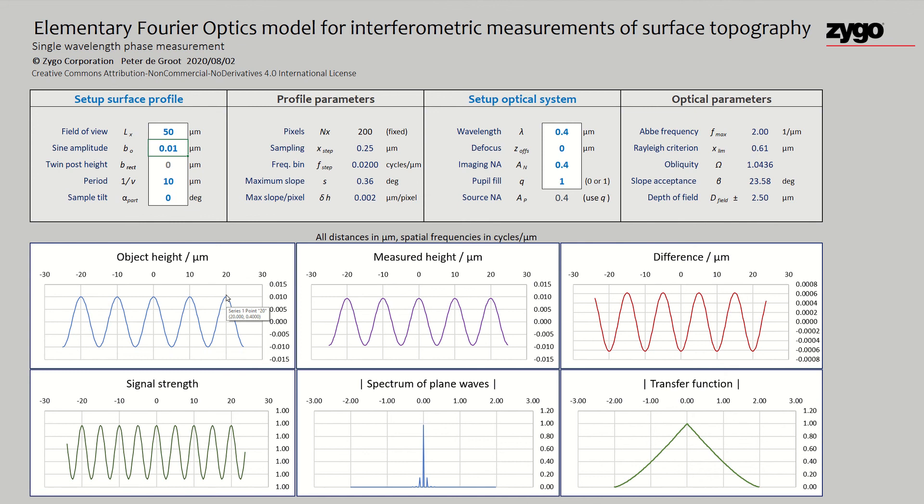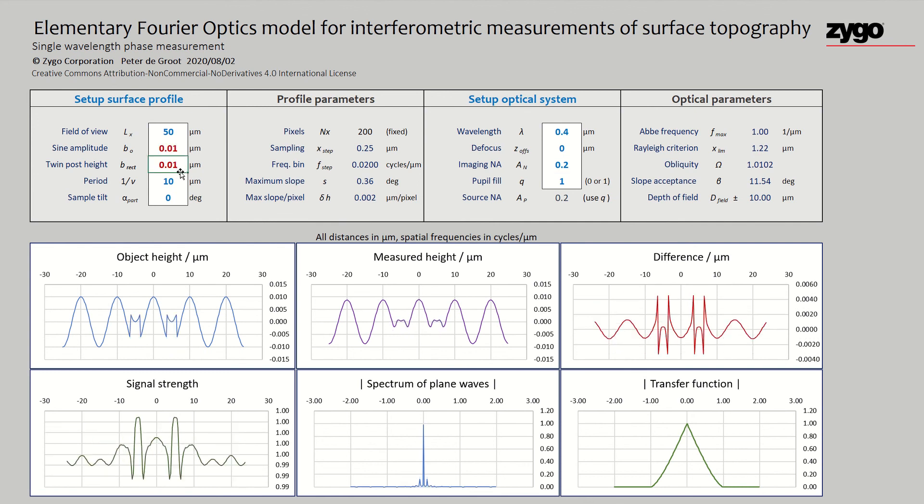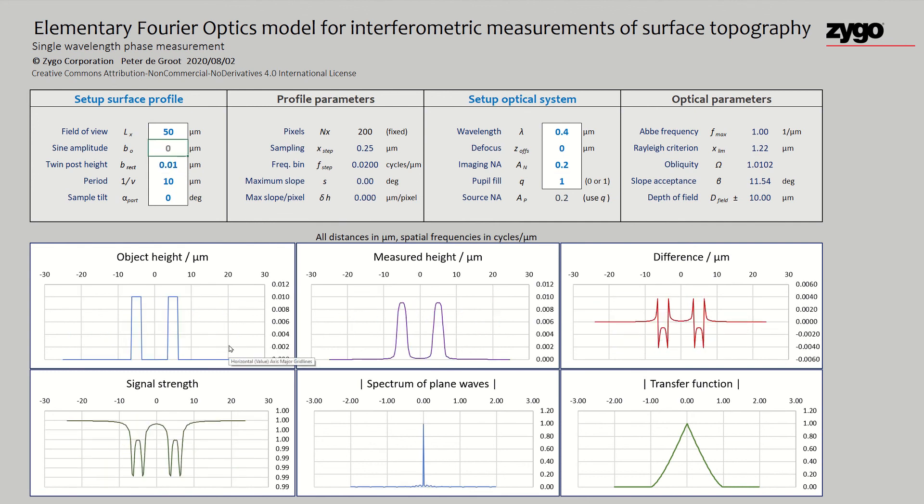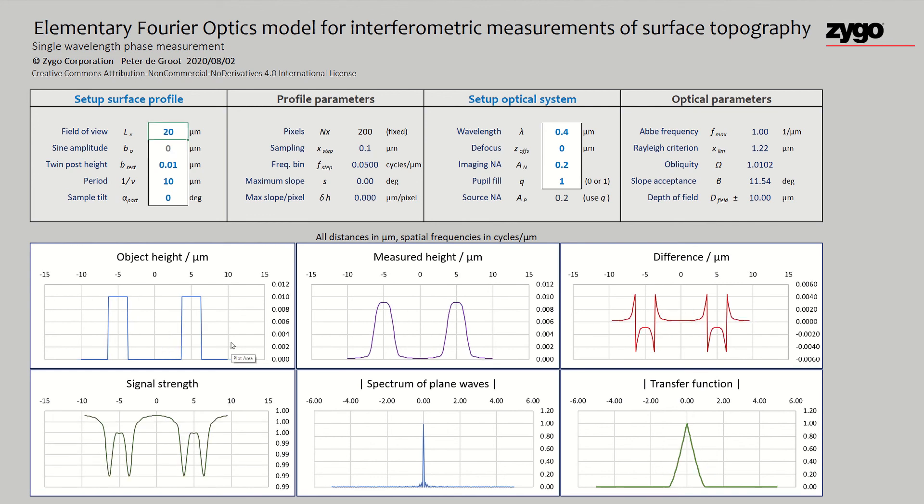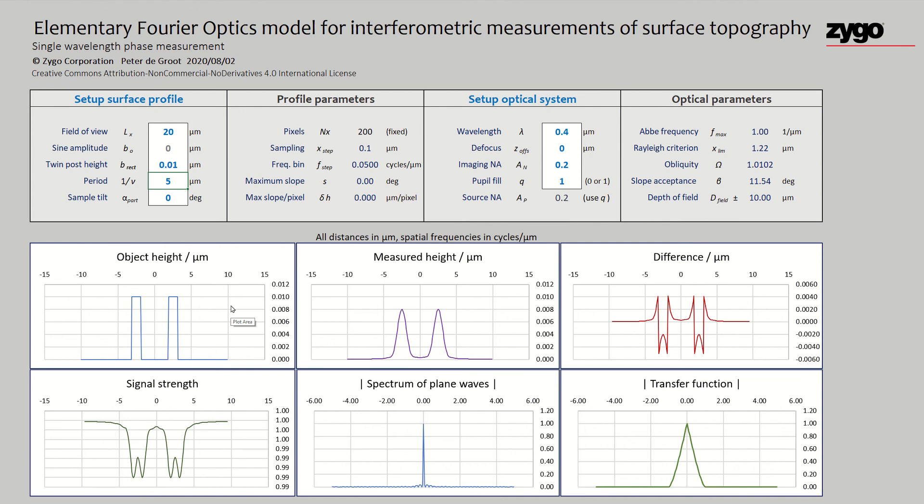Let's go back down to 0.01 and try something else. Let's look at the twin post height. When we do that, it turns red. That's because we haven't put the sine amplitude to zero. So I'll put the sine amplitude to zero. Let's increase the magnification a little bit by changing the field of view. Let's bring those posts a little bit closer together. You can see there's some blurring here, and that's expected because it's an optical system.